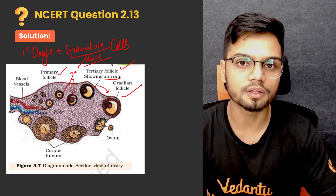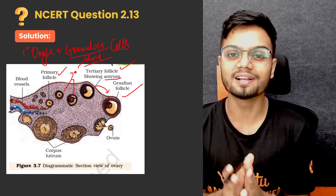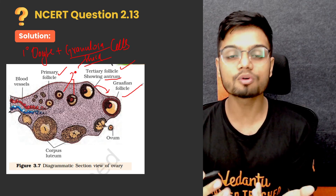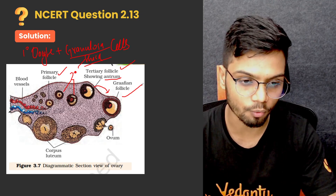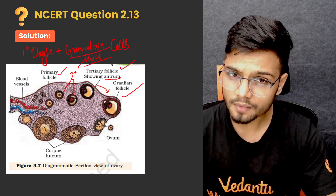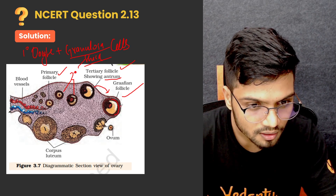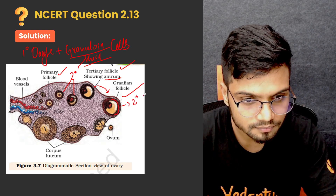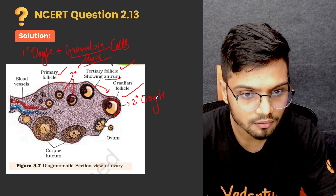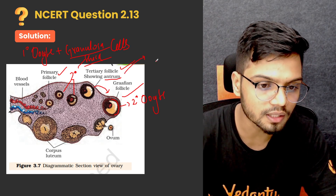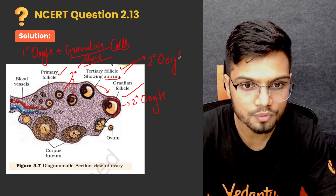The tertiary follicle then develops into the Graafian follicle — this is the amazing Graafian follicle. This Graafian follicle is the most advanced type of follicle in the structure of the ovary. Now inside the Graafian follicle we have the secondary oocyte. Even in the case of your tertiary follicle, we have the secondary oocyte.